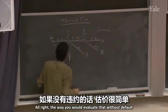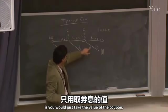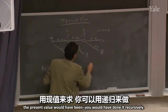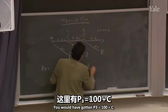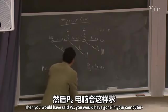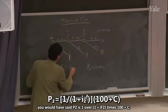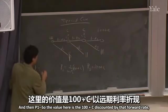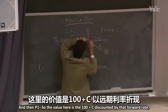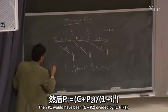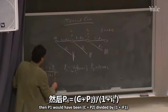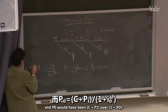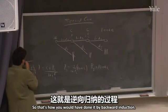Without default you would evaluate recursively by backward induction: P3 equals 100 plus C. Then P2 equals (1 over (1 plus IF2)) times (100 plus C). Then P1 equals (C plus P2) divided by (1 plus IF1) — the value discounted by that forward rate. And P0 equals (C plus P1) divided by (1 plus IF0). That's how you do it by backward induction with no default.